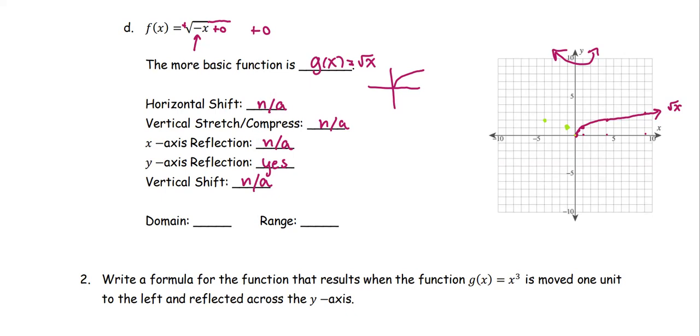And for negative 9, negative of negative 9 becomes positive 9. The square root is 3. So this is the negative x inside of the square root.